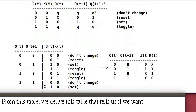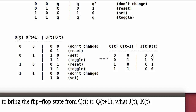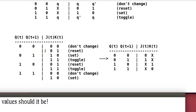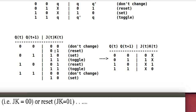From this table, we derive a table that tells us: if we want to bring a state from Q(t) to Q(t+1), what JK values should be used? To bring the flip-flop state from 0 to 0, we either don't change it or reset it — JK equals 0,0 or 0,1. To bring it from 0 to 1, we either set it (JK=1,0) or toggle it (JK=1,1). To bring it from 1 to 0, we either reset it (JK=0,1) or toggle it (JK=1,1). To bring it from 1 to 1, we either don't change it (JK=0,0) or set it (JK=1,0).